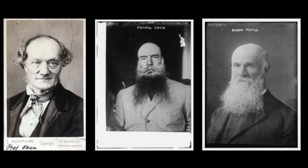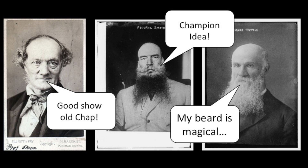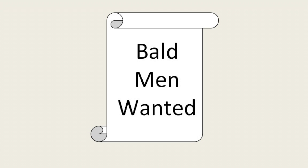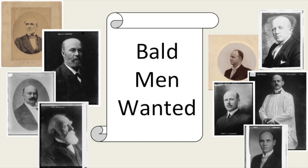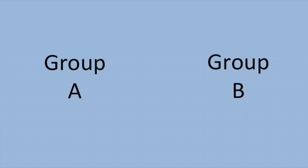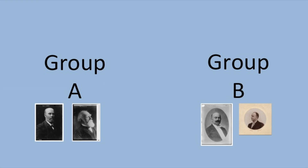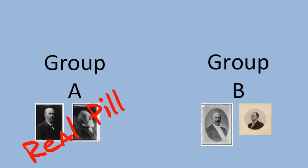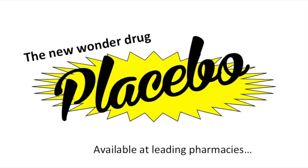Let's say we want to find out if a certain pill cures baldness in men — we could do an RCT. You need to recruit a sample from the population you're looking to study. Today we need to recruit a group of balding men. When you have your sample, you want to randomly assign them to one of two groups: either the intervention group, group A, who are going to get the shiny new pill, or the control group, who will get a placebo.